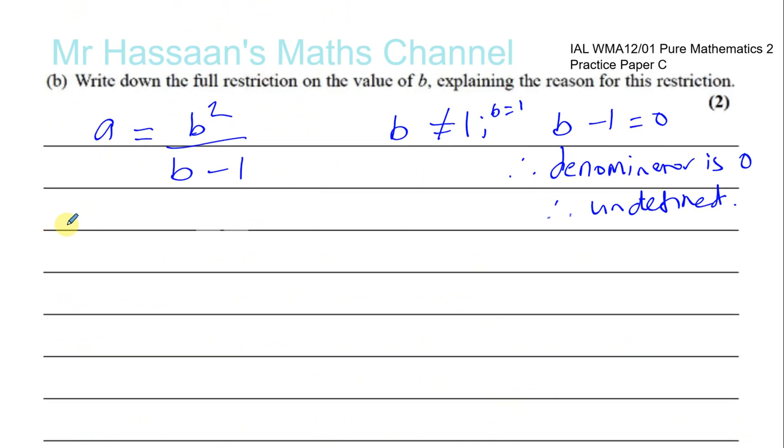So, when they give you some stuff like that, sometimes you've got to think of it. Now, if A is greater than B is greater than 0, that means A and B are both positive. They're both positive. Okay, now, if A is positive, then that means B squared over B minus 1 has to also be positive.